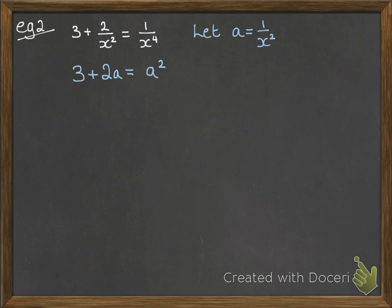And the 1 over x to the 4 is A squared, because that would be 1 over x squared, all squared. Now rearrange that into the form that we're used to. So we have the A squared coming first, and then everything follows after that. And we can factorize that one.